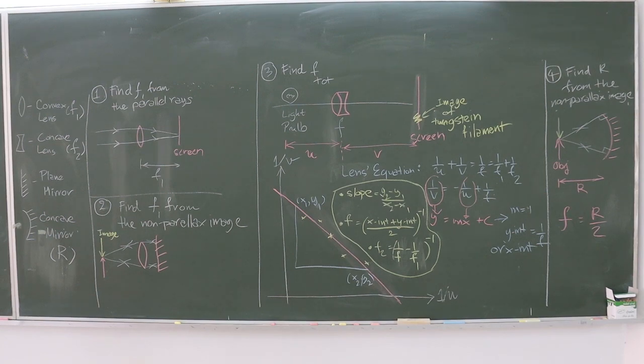Hi students, this is physics experiment number 2 about lenses and mirrors. I'll start with the explanation of optical device symbols we use in this experiment.